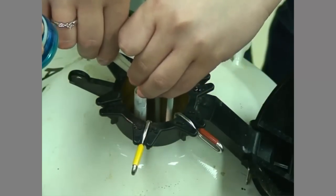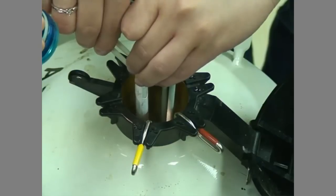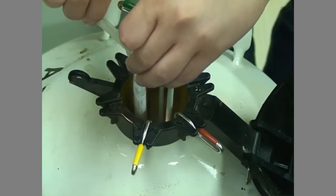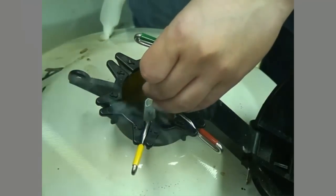After the needed semen straws are removed, bend this tab back to its original position so the cane label can be easily read in the tank. Once a straw is removed from the cane, do not return it to the tank.